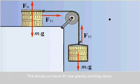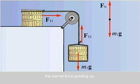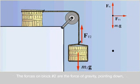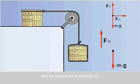The forces on block number one are gravity pointing down, the normal force pointing up, and the tension in the cord pointing away from the block to the right. The forces on block number two are the force of gravity pointing down and the tension force pointing up.